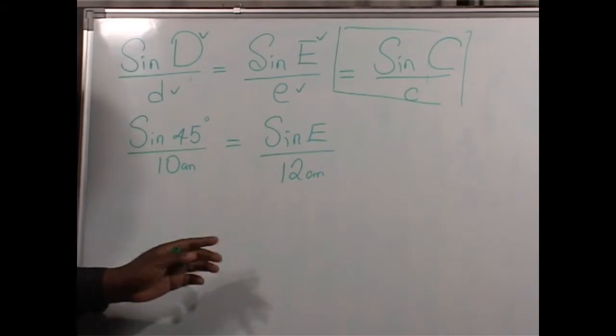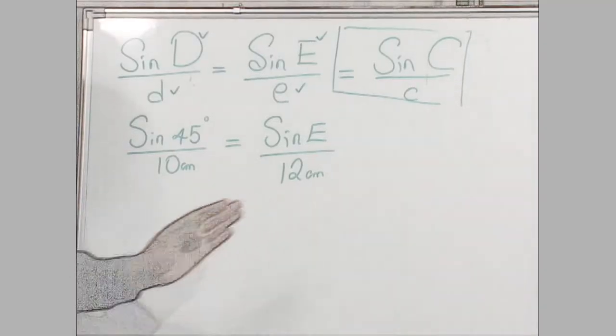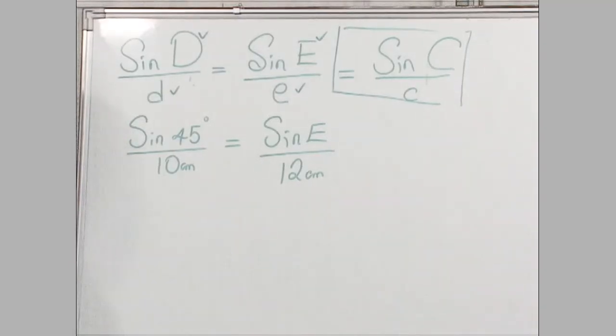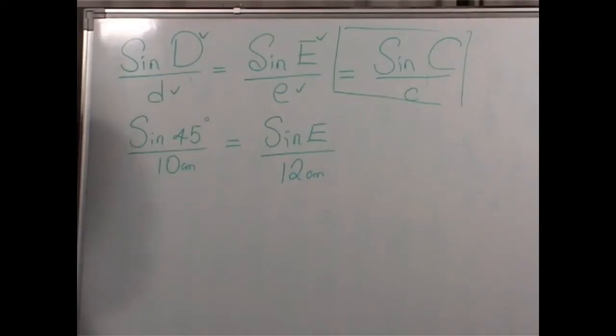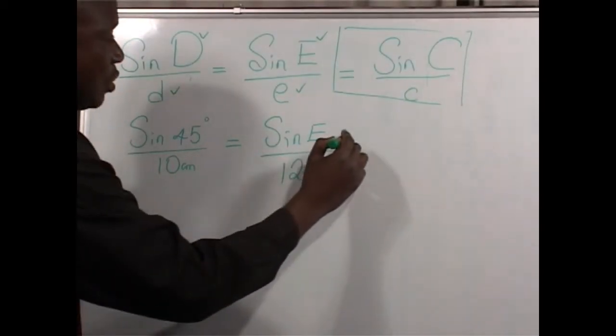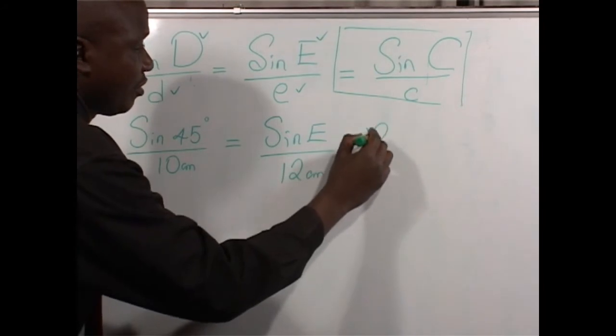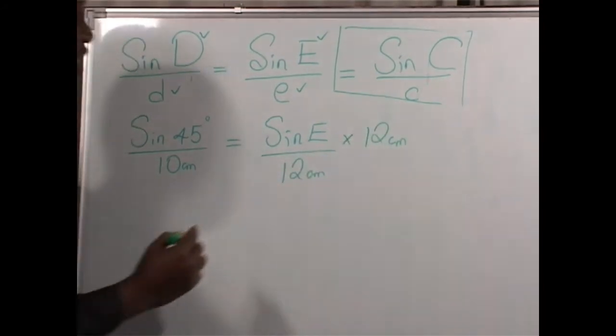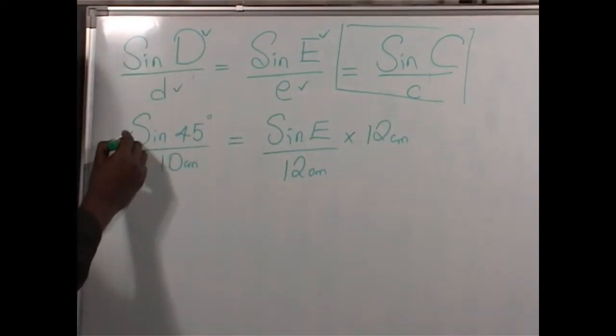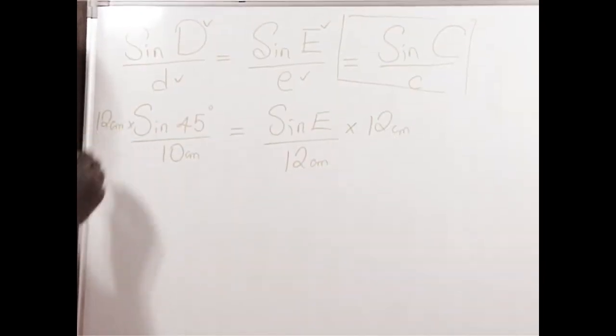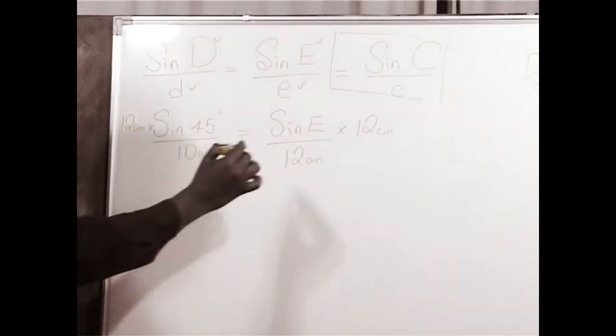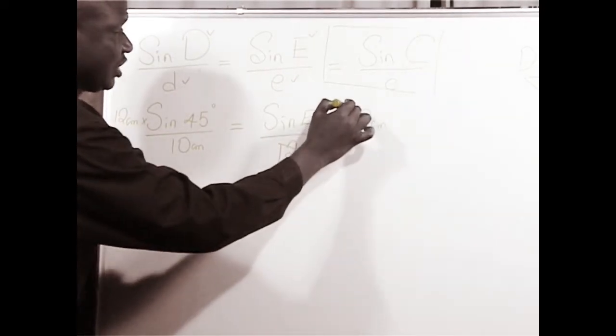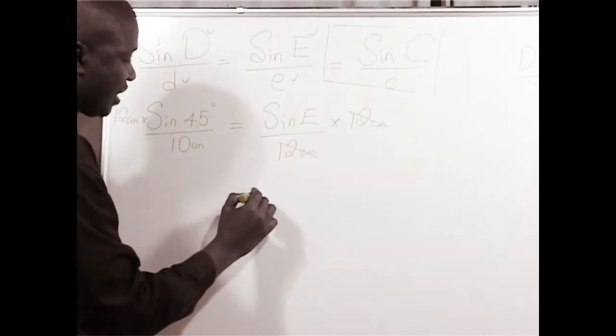Since it is divided by 12, we are going to multiply both sides of the equation by 12 centimeters. So we multiply by 12 centimeters, and to balance the equation, we also multiply the other side by 12 centimeters. 12 centimeters and 12 centimeters will divide.